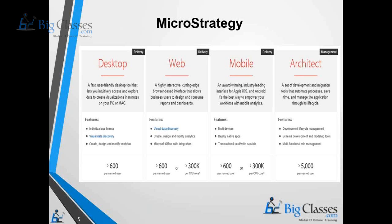We have listed out a few of the components — either it could be a per-user license or a CPU-based license. From the desktop perspective, MicroStrategy charges around $600 per user. That depends on the license type — enterprise level, user-based, or CPU-based. For the web component, it could be $600 per user or $300,000 per CPU. The same applies for mobile. For MicroStrategy Architect, it's around $5,000 per user.